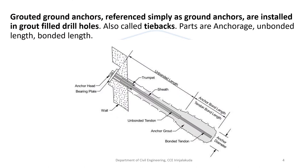Ground anchors are also called tiebacks. The parts of a ground anchor are: first, the anchor head; second, the unbounded length; and third, the bonded length. The anchor head part consists of an anchor head and a bearing plate. The unbounded length consists of a tendon, trumpet, etc. The bond length consists of grout, bond, tendon, etc.